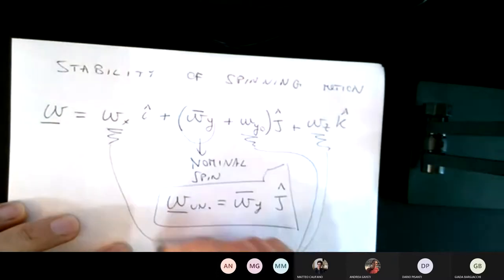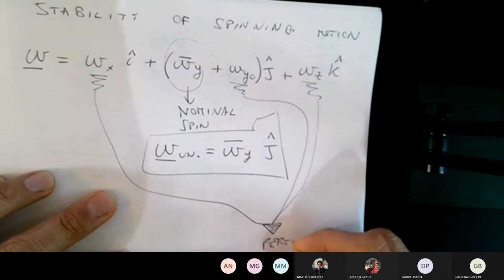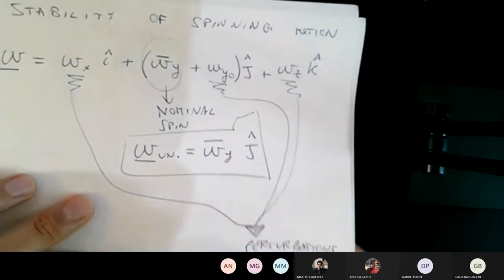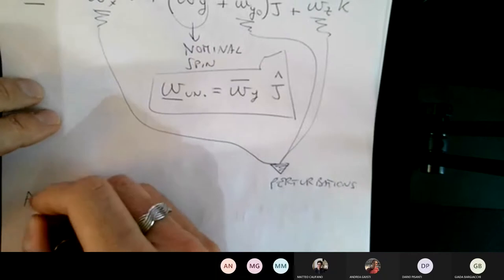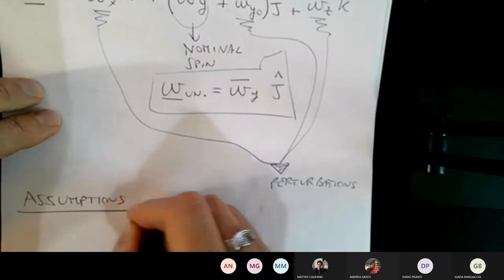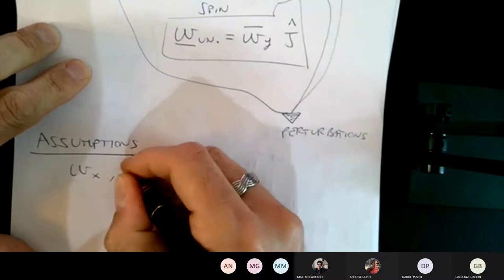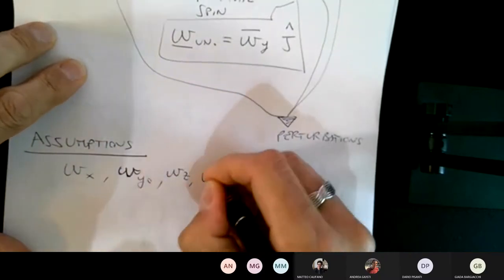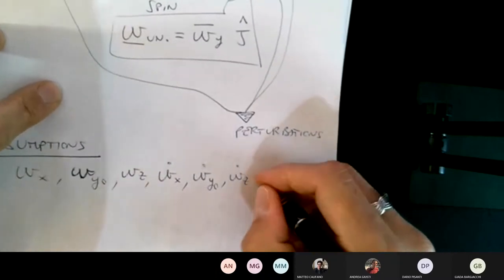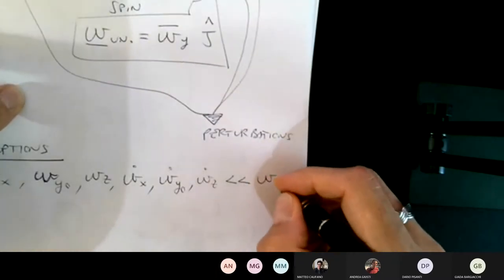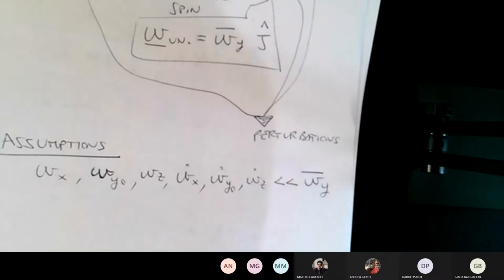These perturbations can happen for any reason. So these are my perturbations of the spin motion. And what I'm going to assume is that all of these — omega_x, omega_y zero, omega_z, omega_x dot, omega_y zero dot, and omega_z dot — are very small with respect to the nominal spin amplitude. This has to be an assumption because I want to linearize my equations, but it's still a perturbation.